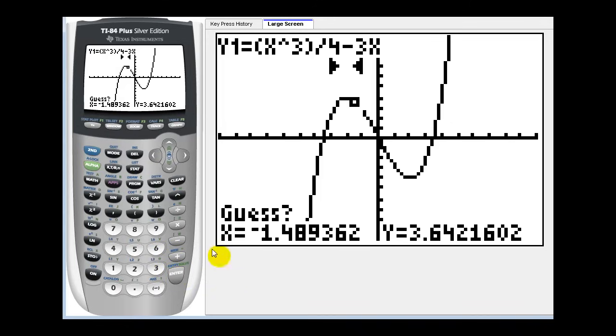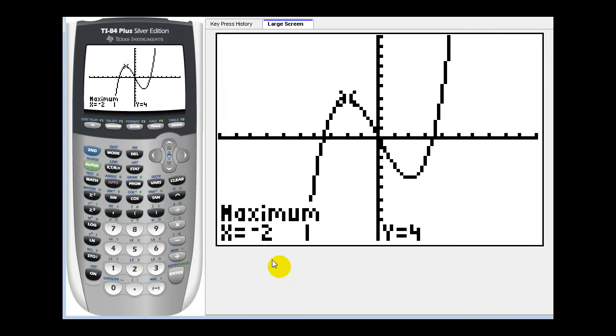And then again, it's going to ask us to guess. I'm just going to go ahead and move the cursor closer to the relative maximum. Press enter again, and you can see the coordinates of this point are negative two, four.